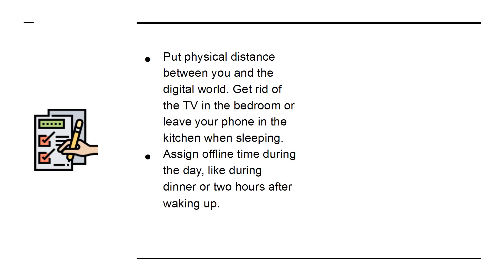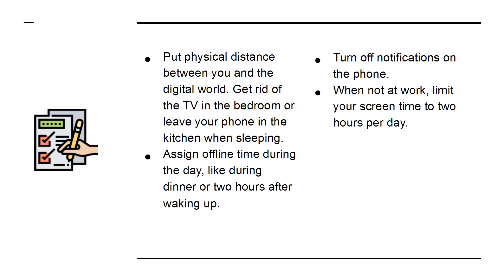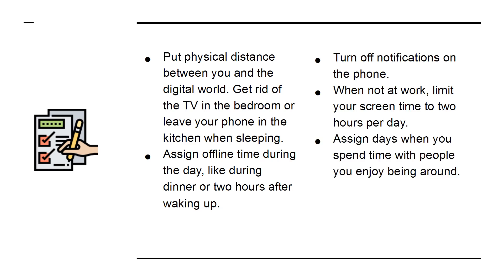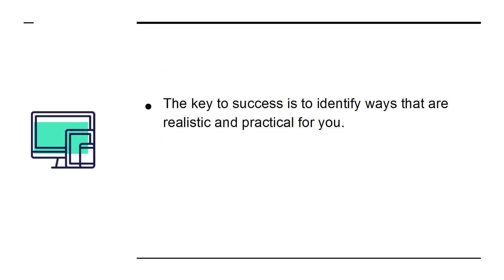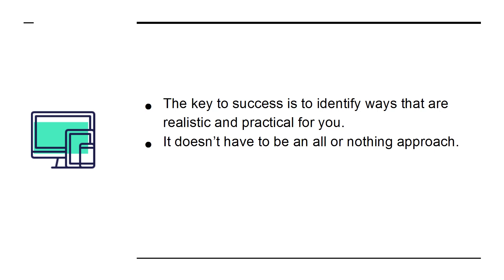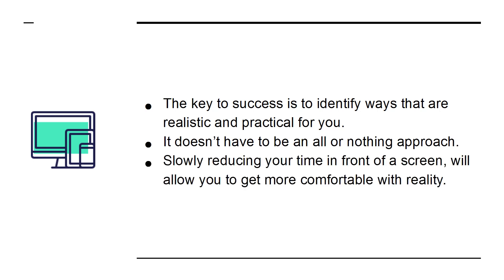Assign offline time during the day, like during dinner or two hours after waking up. Turn off notifications on the phone. When not at work, limit your screen time to two hours per day. Assign days when you spend time with people you enjoy being around. The key to success is to identify ways that are realistic and practical for you. It doesn't have to be an all-or-nothing approach. Slowly reducing your time in front of a screen will allow you to get more comfortable with reality.